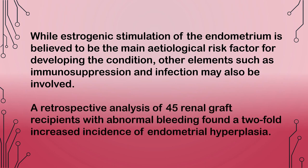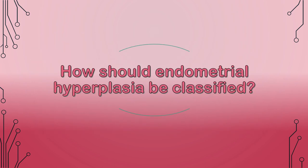A retrospective analysis of 45 renal graft recipients with abnormal bleeding found a two-fold increased incidence of endometrial hyperplasia. How should endometrial hyperplasia be classified?